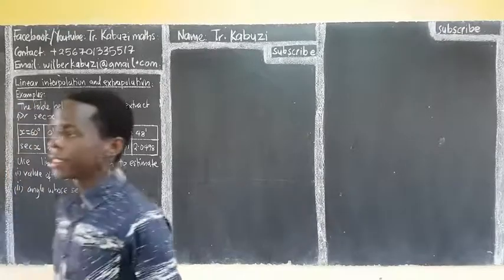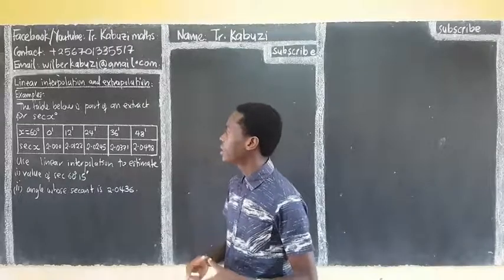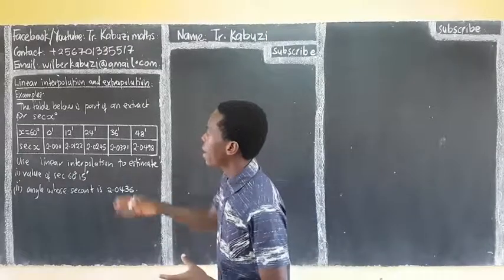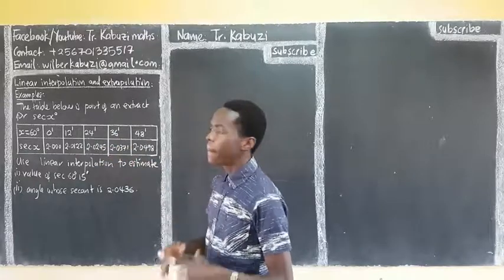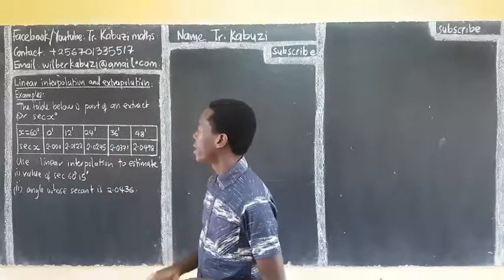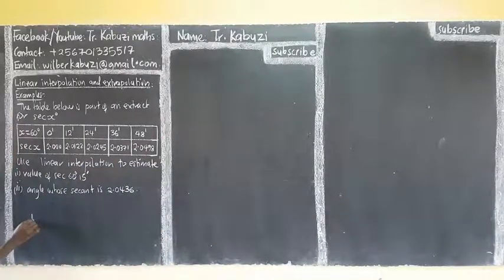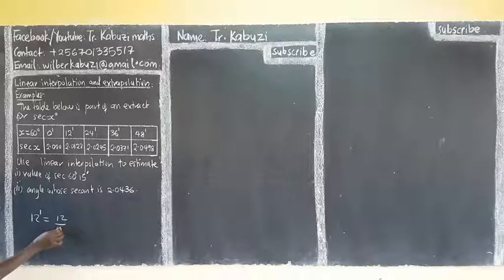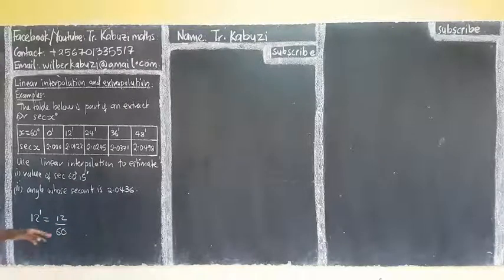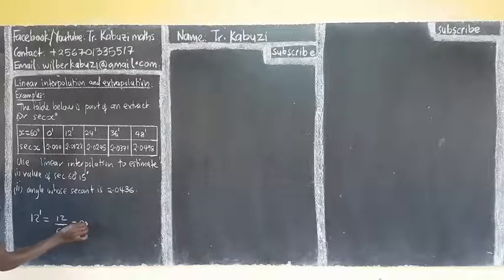Now members, today we are going to see how we use these interpolation techniques with sec functions. Remember, 12 minutes means 12 over 60, since there are 60 minutes in a degree.